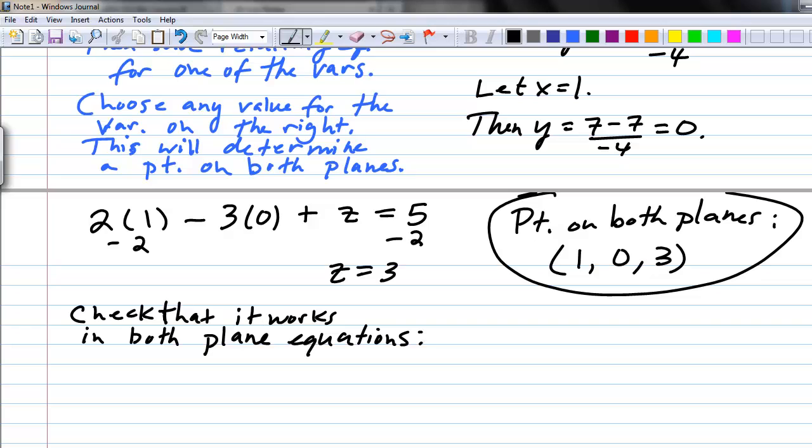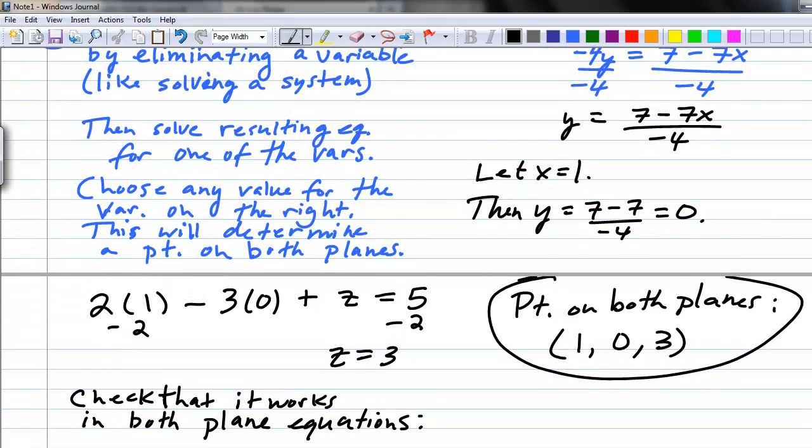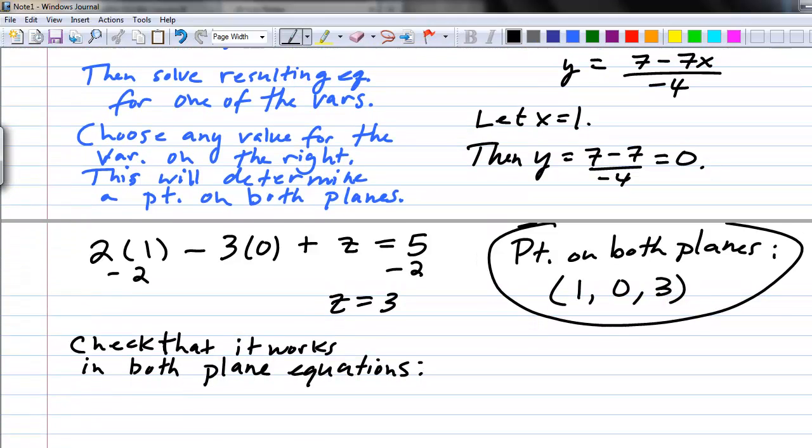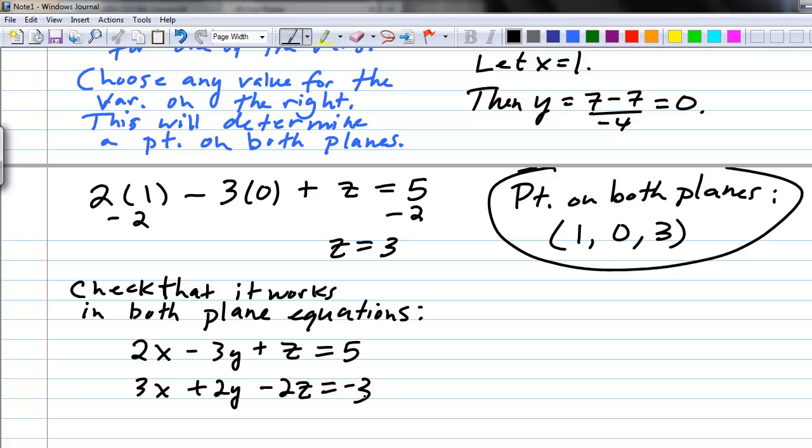The next thing we need to do is to verify that this indeed works in both planes. Let's just check that it works in both plane equations. The equations are 2x minus 3y plus z equals 5 and 3x plus 2y minus 2z equals 3. To check in the first equation, let's put the point in. We've got 2 times 1 minus 3 times 0 plus 3 equals 2 plus 3, or 5. So it checks in the first equation.